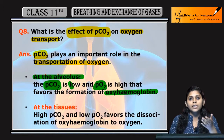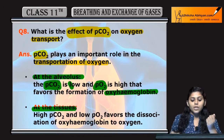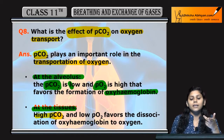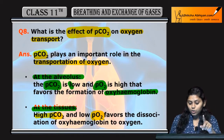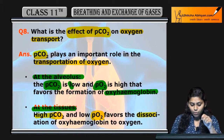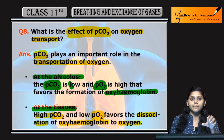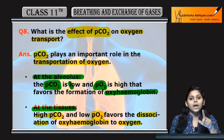In the tissues, oxygen concentration is higher so oxygen attaches to hemoglobin. However, the partial pressure of carbon dioxide in the tissues is higher as compared to the partial pressure of oxygen.